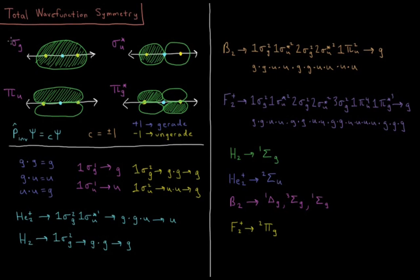Individual atomic orbitals are g or u based on their inversion symmetry. The sigma bonding orbital is symmetric with respect to inversion, so it gets a g label. The sigma antibonding orbital is anti-symmetric — it always changes sign upon inversion through the origin — so it gets a u label. Pi bonding orbitals are ungerade (anti-symmetric), and pi antibonding orbitals are gerade (symmetric).